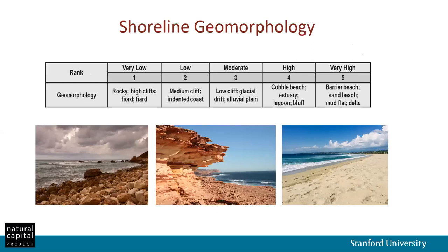The first input is shoreline geomorphology. The model distinguishes between shorelines that are relatively hard to erode or wash away versus very soft shorelines — rocky, gravelly shorelines versus sandy, muddy shorelines. This is an input where the user assigns absolute ranks based on the different shoreline type, often as a line shapefile where the ranks are assigned to line segments.